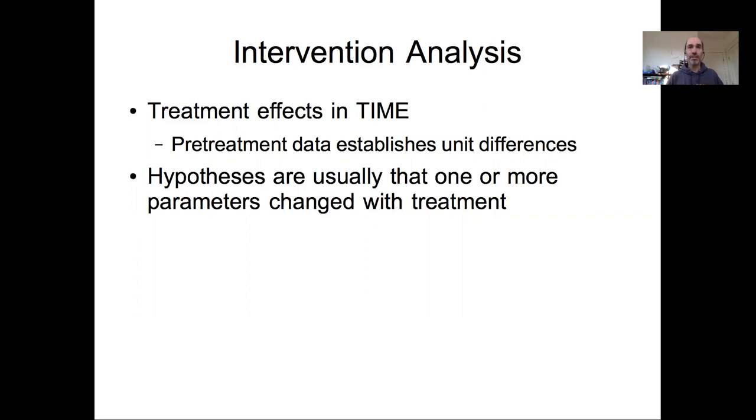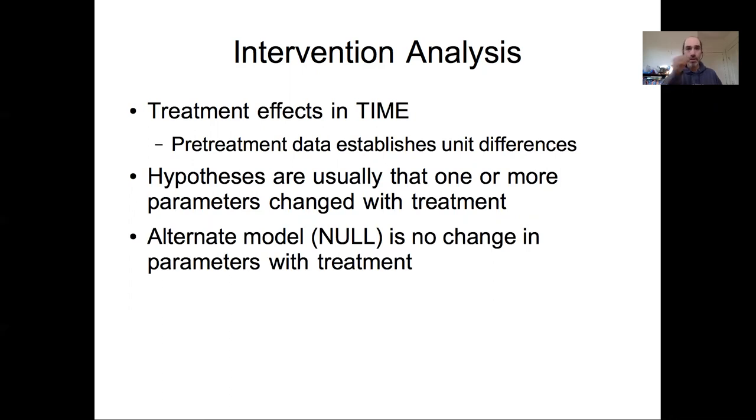Random effects on units or auto-correlated errors on units—there are often differences between our observational units that are just there by chance. We can collect pre-treatment data to establish how different units were different from each other before we impose our experimental manipulation. Our hypotheses are usually related to how one or more of the parameters in our model will change when we impose an experimental treatment, with the null model being that there'd be no change in the parameters.